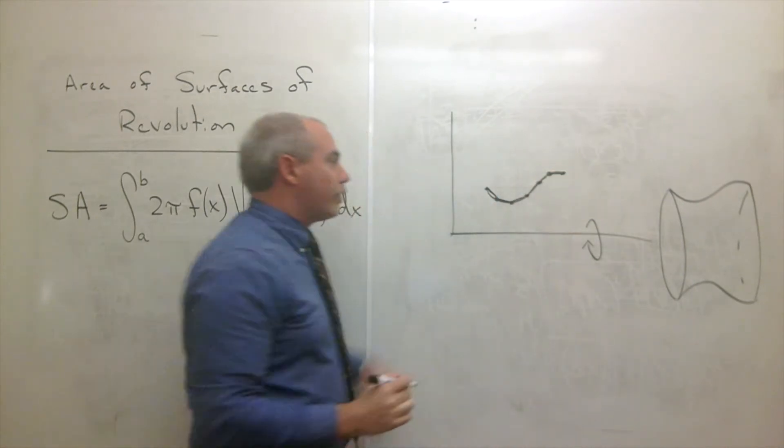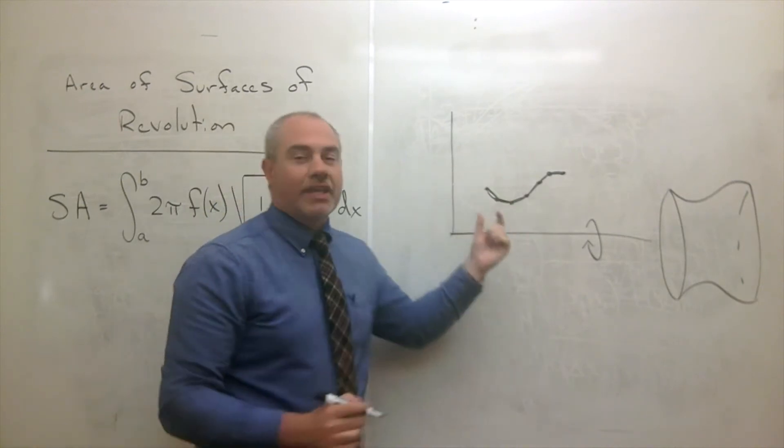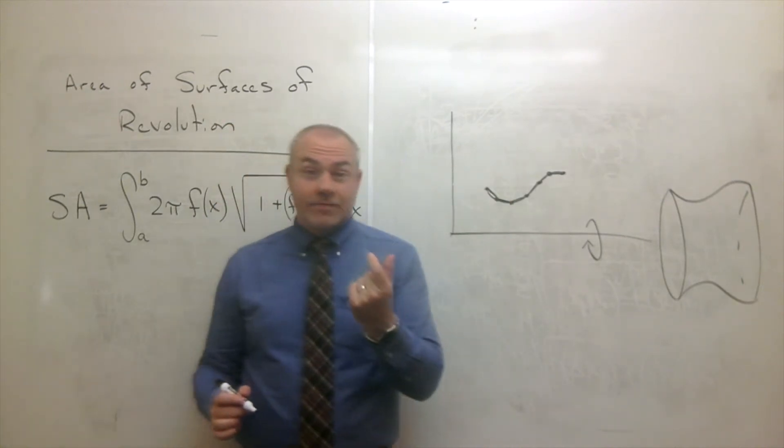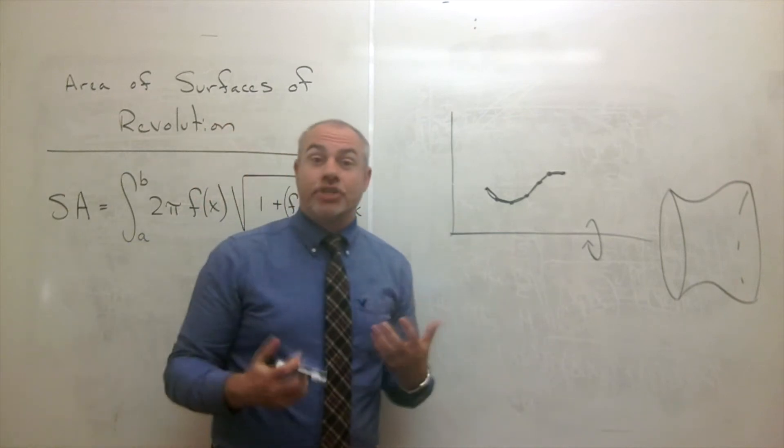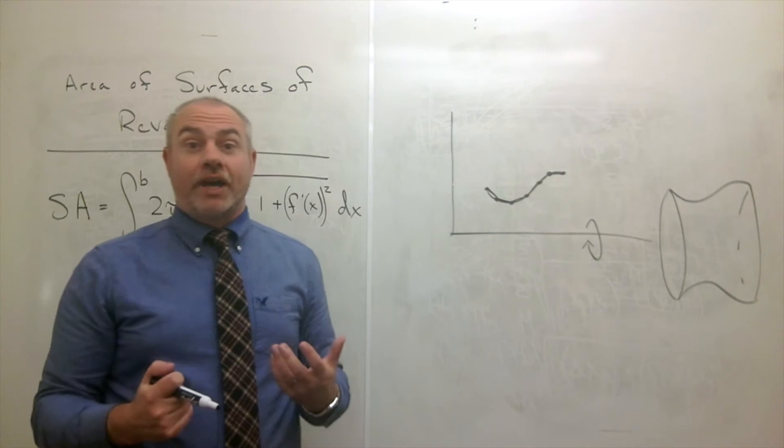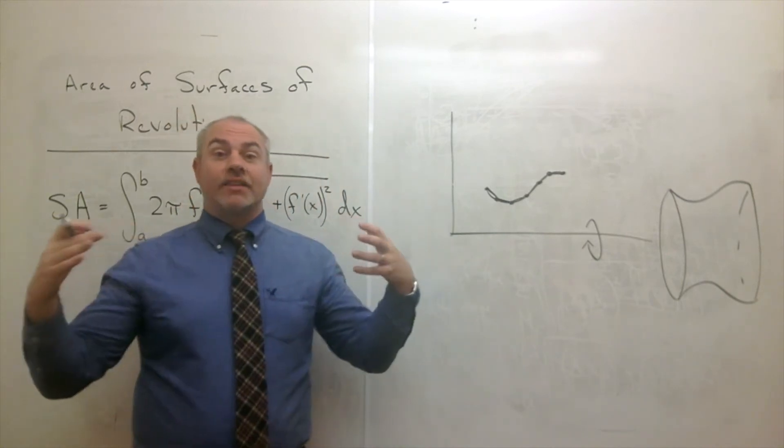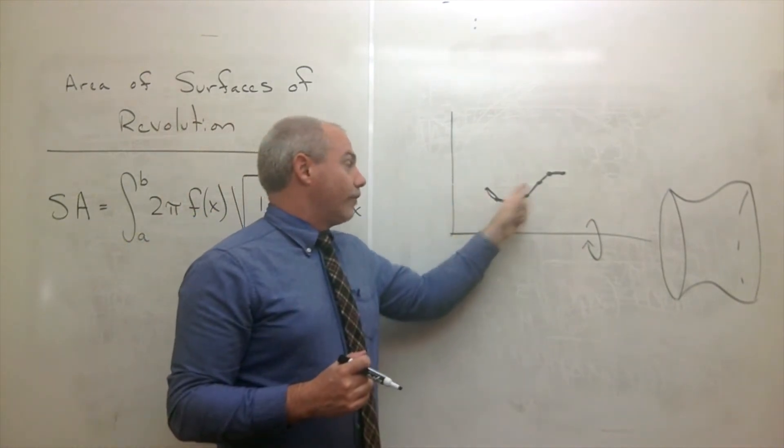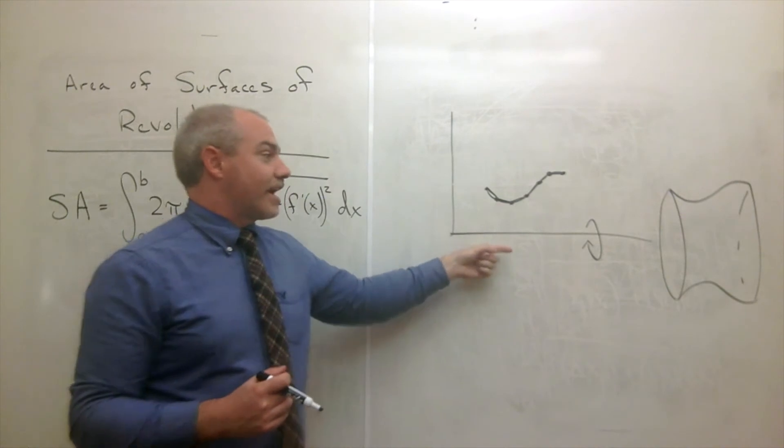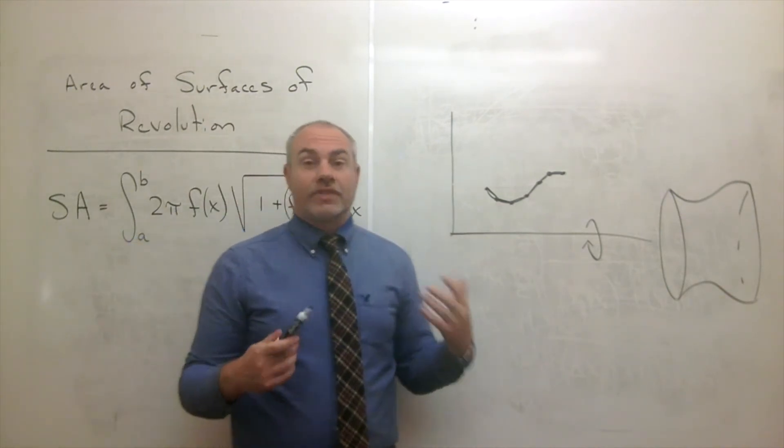So now we spin all of these little line segments and we get what we call little frustums. Okay, that's a geometric object. And from geometry, we know how to find the surface area of one of these objects. And then we take the limit as the number of these little intervals that we're rotating around the x-axis goes to infinity, and we will get the actual surface area.